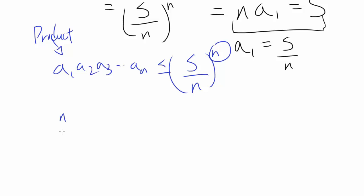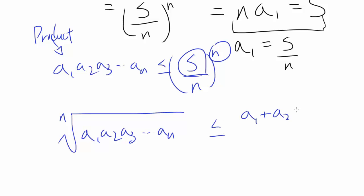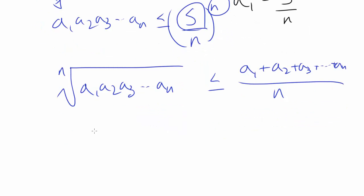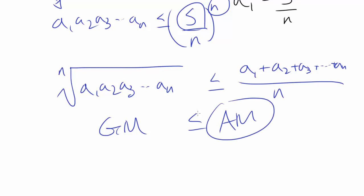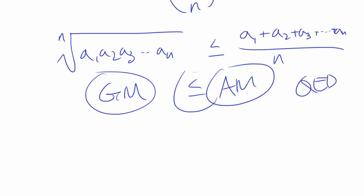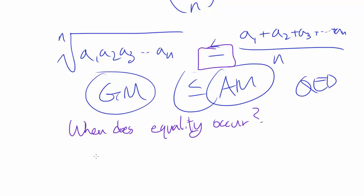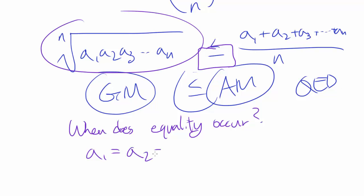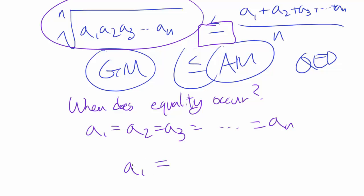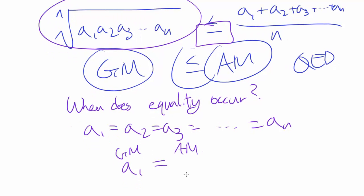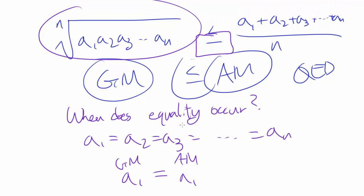Taking the nth root of the entire inequality, we get: the nth root of A₁ · A₂ · A₃ · ... · Aₙ is less than or equal to (A₁ + A₂ + A₃ + ... + Aₙ) divided by n. And this is exactly the AM-GM inequality — Arithmetic Mean is always greater than or equal to the Geometric Mean. We have just proven AM-GM inequality. Equality occurs when all terms are equal to each other: then the nth root of A₁ⁿ gives A₁ for the GM, and the AM is n · A₁ divided by n, which is also A₁.